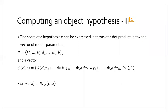Thank you, Akash. My name is Sidhan. As we have discussed so far, the score of z, which is beta times phi of (H, z), simply represents how likely it is that the object you are looking for is at that particular position z. Now I would like to explain how we use this score to find the most likely position.